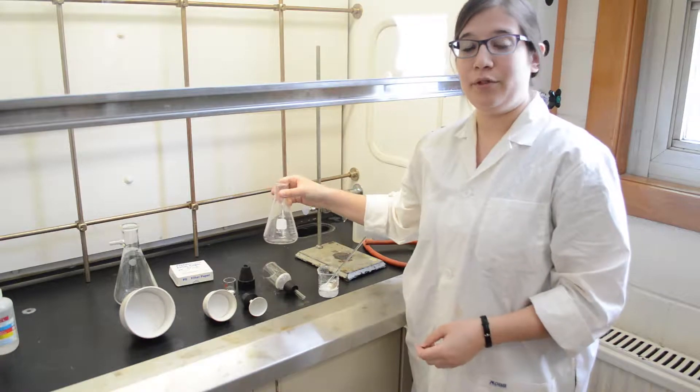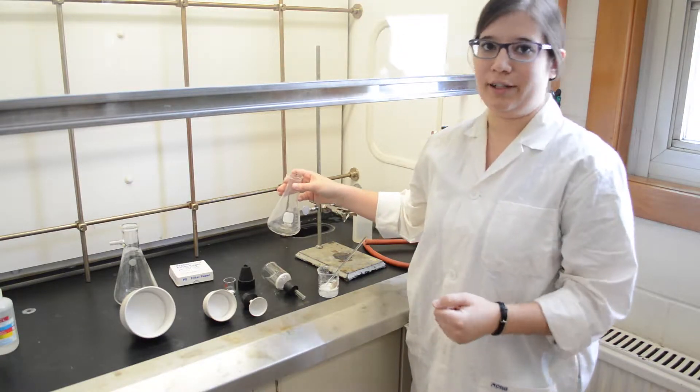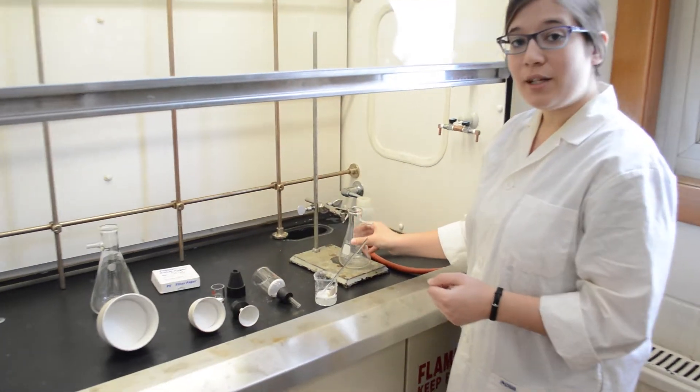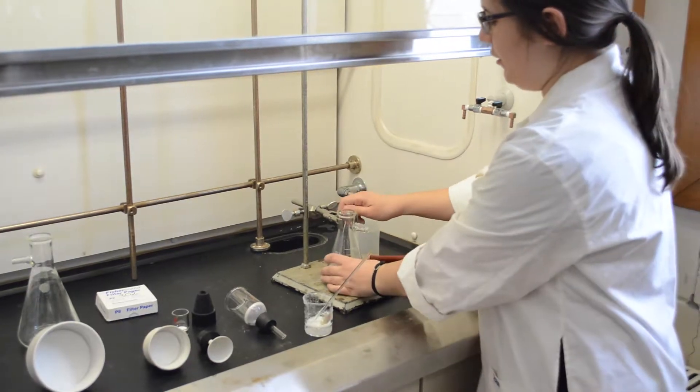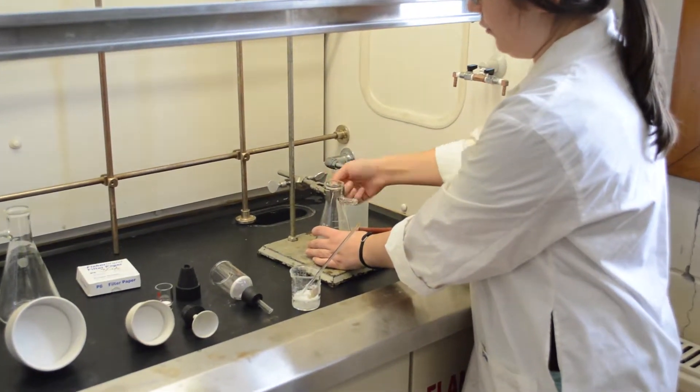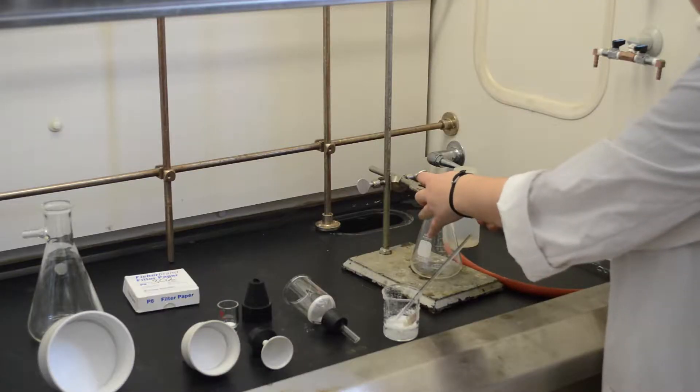I'm going to show an example of using a larger sintered glass funnel. The first step is always to clamp your filter flask to a retort stand. Then you have to attach the tubing.